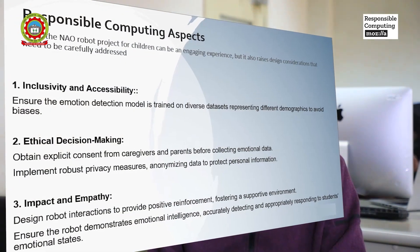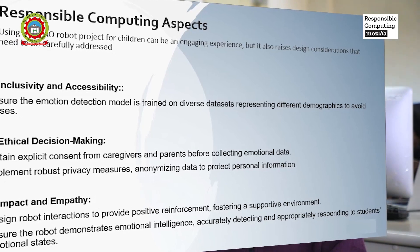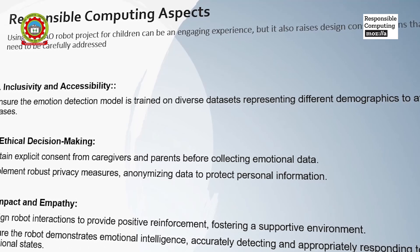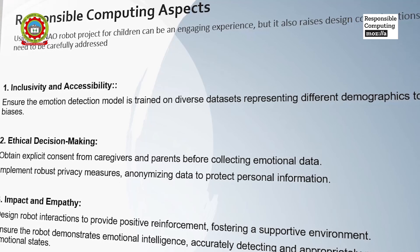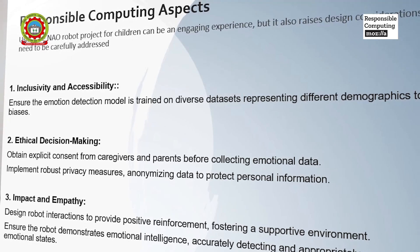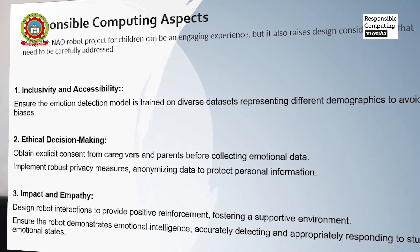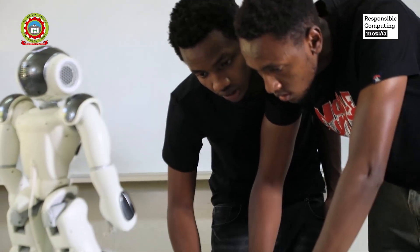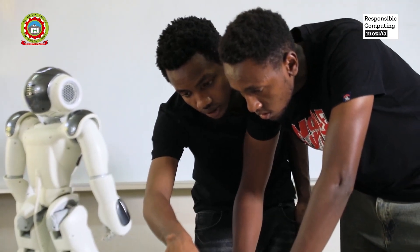We are looking forward to building a technology that will aid the visually impaired in navigation. When it comes to the responsible computing principles, the first one we include is inclusivity and accessibility, whereby we train our model from a dataset including diverse backgrounds for image recognition, so that it correctly detects various objects. When it comes to ethical decision making, we obtain explicit consent from our clients.